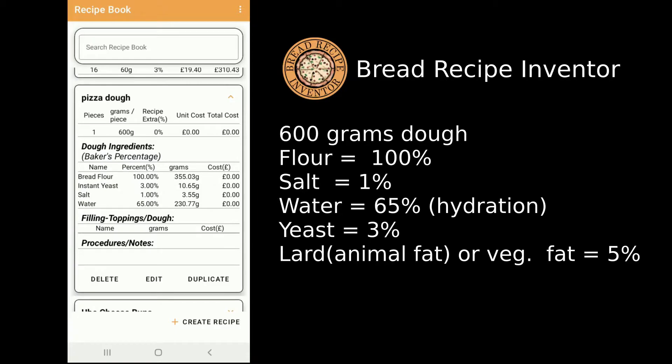Here you can see the list of ingredients for the dough: bread flour, instant yeast, salt, and water — with their corresponding grams and their corresponding percentage with respect to flour. That is how we use the baker's percentage.